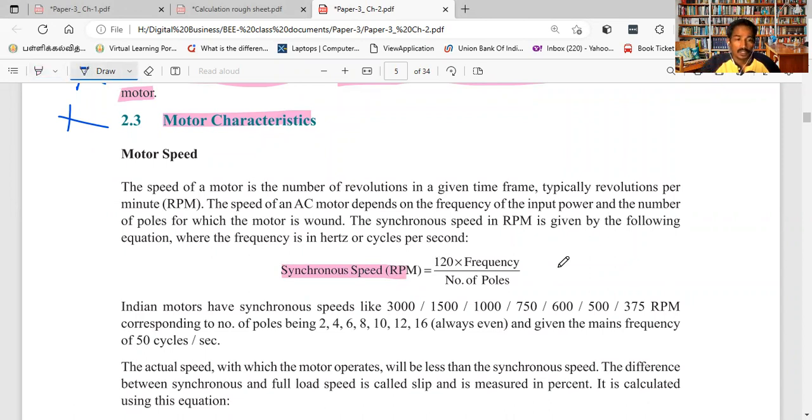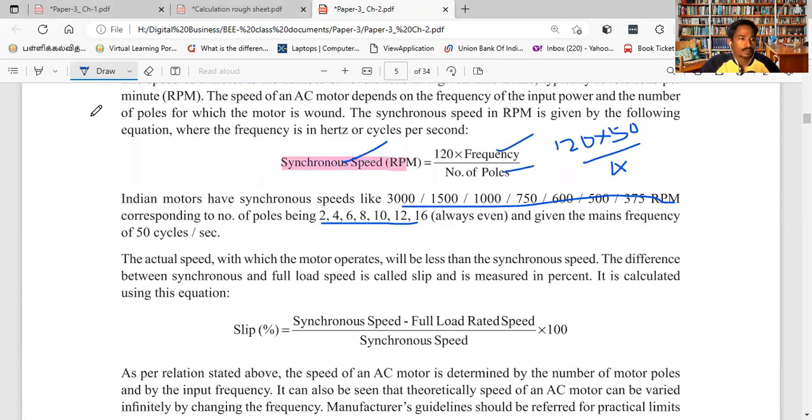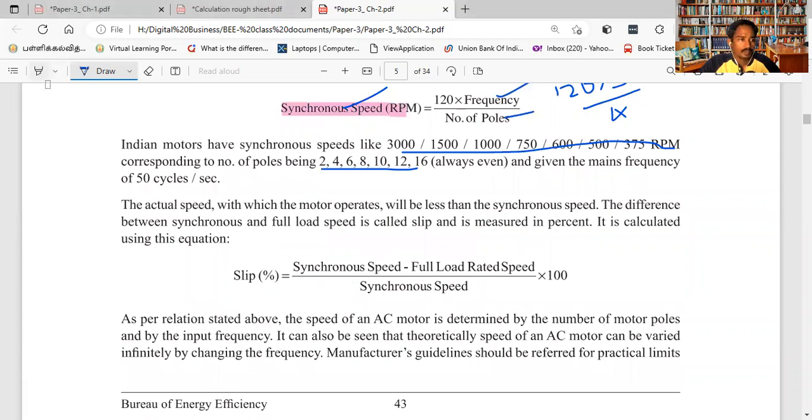What is the synchronous speed? It depends on the frequency and the number of poles. Suppose the number of poles is 2, 4, 6 - this determines the synchronous speed.